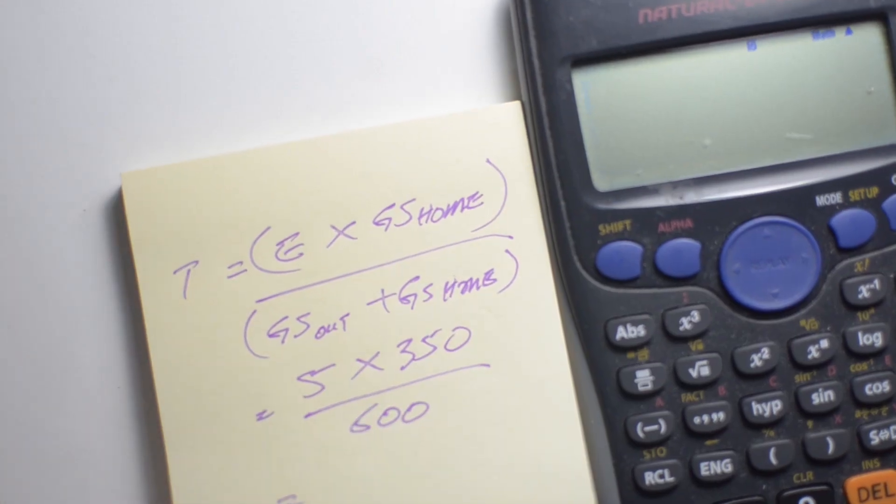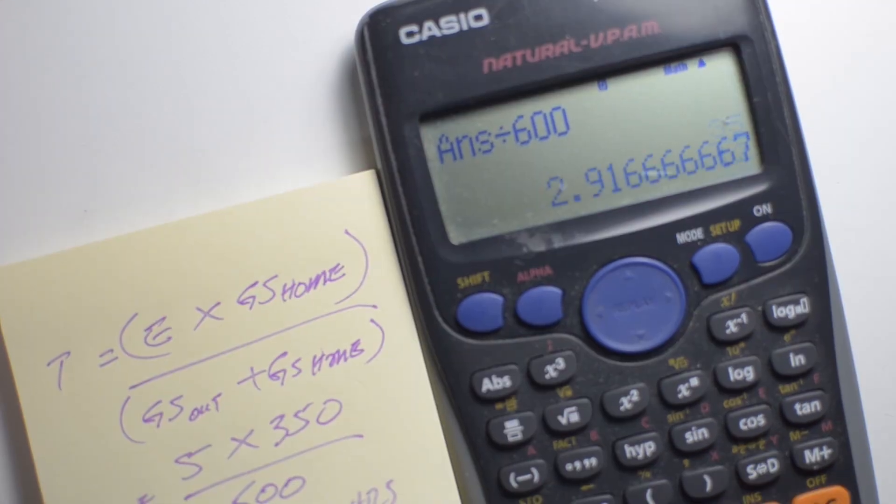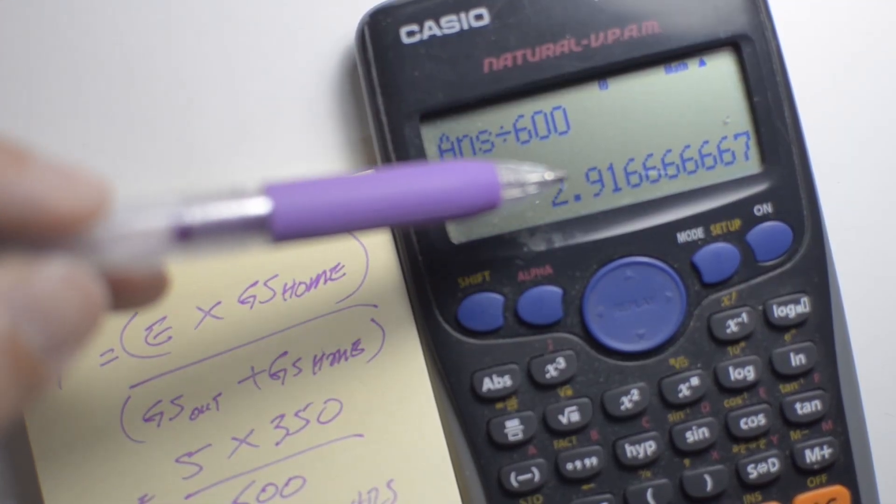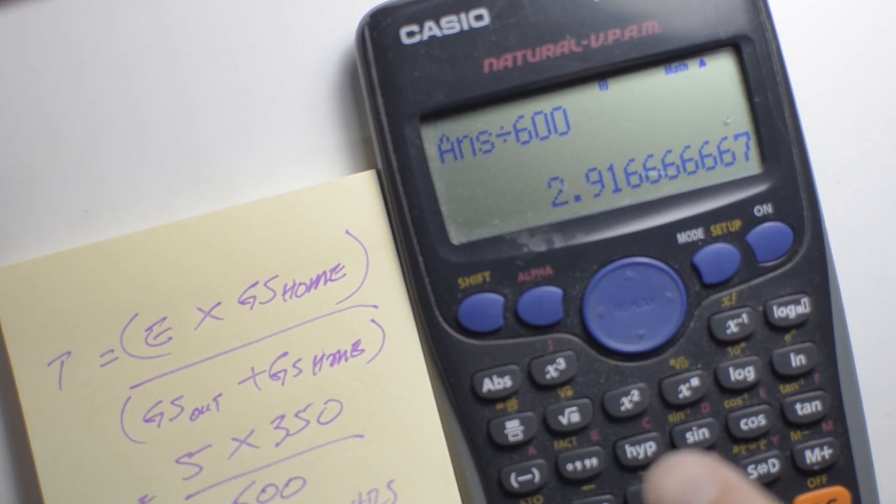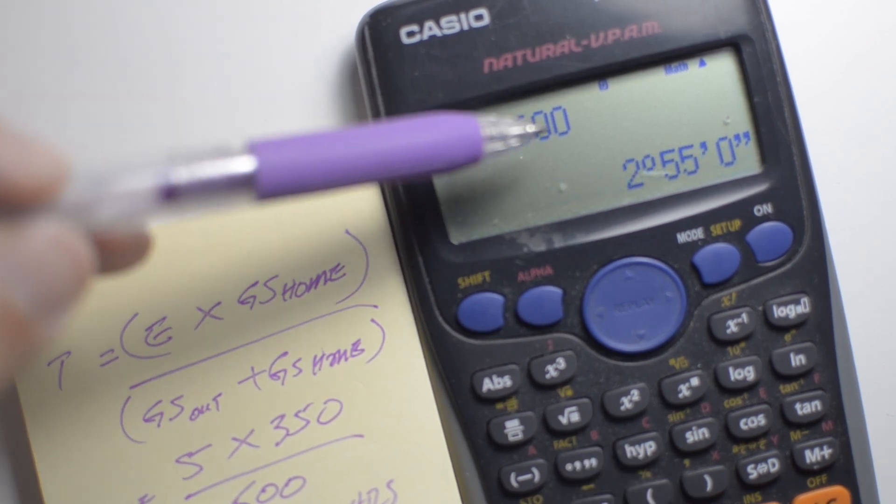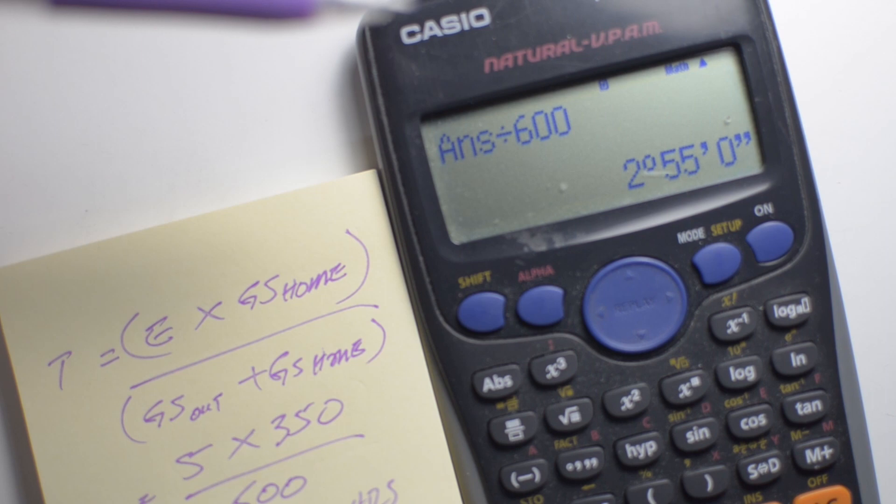So let's work that out. 5 times 350 is 1750, and we're going to divide that by 600. And that's 2.917 hours, or 2 hours and 55 minutes. Now,